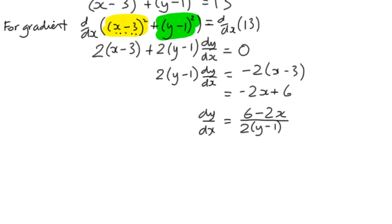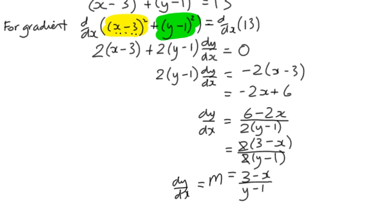I shouldn't really have multiplied out that 2 because we're just going to take it back out, which leaves us with 3 minus x over y minus 1. So that's the dy by dx, which of course is also going to be our gradient rule.